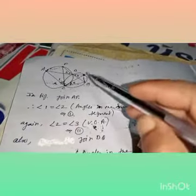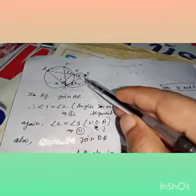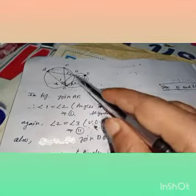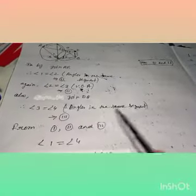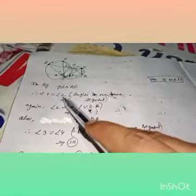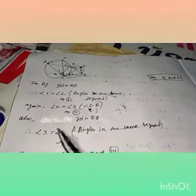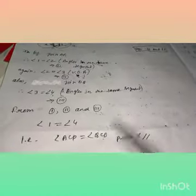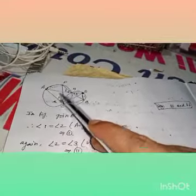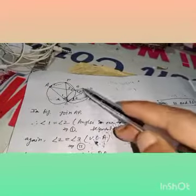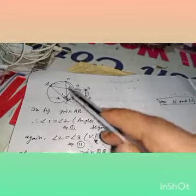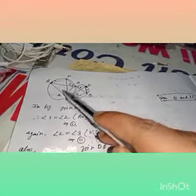Also join DQ. After joining DQ, you can see this chord, and from this chord you get angle 3 and angle 4 — they are angles in the same segment. So angle 3 is equal to angle 4. Now combining: angle 1 equals angle 2 (same segment), angle 2 equals angle 3 (vertically opposite angles), and angle 3 equals angle 4 (same segment). Therefore angle 1 equals angle 4, i.e., angle ACP equals angle QCD. The result is proved.